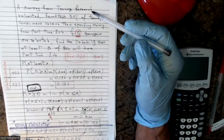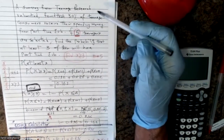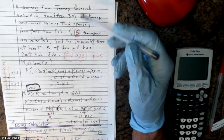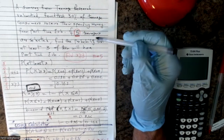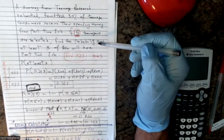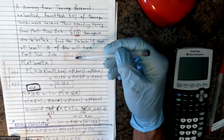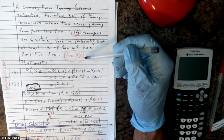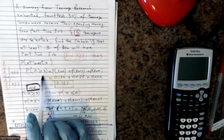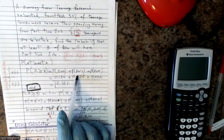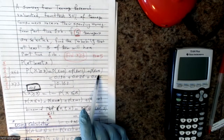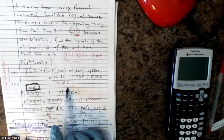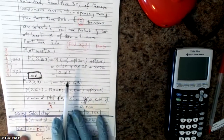A survey found that 30% of teenage consumers receive their spending money from part-time jobs, so p equals 0.30. If five teenagers are selected (n equals 5), find the probability that at least three receive money from part-time jobs. At least three means x greater than or equal to 3, which equals probability of x equals 3, plus probability of x equals 4, plus probability of x equals 5. You calculate each and add them together.